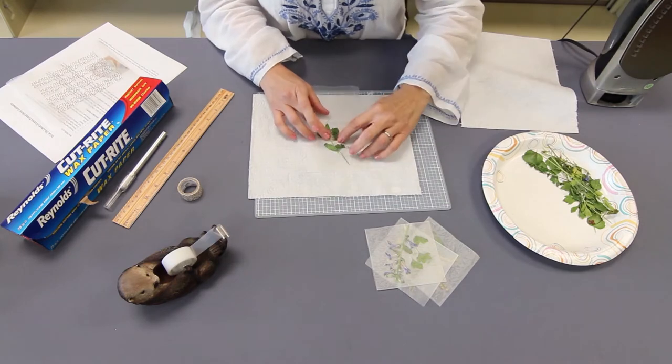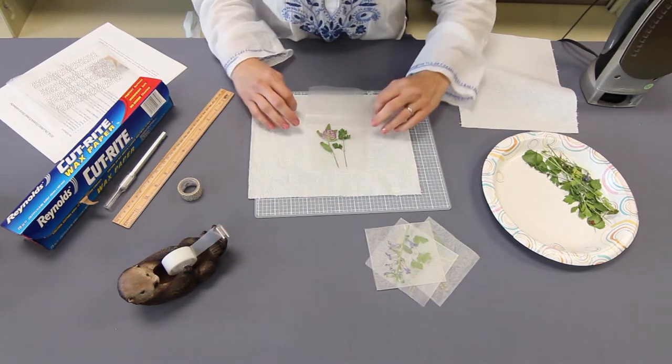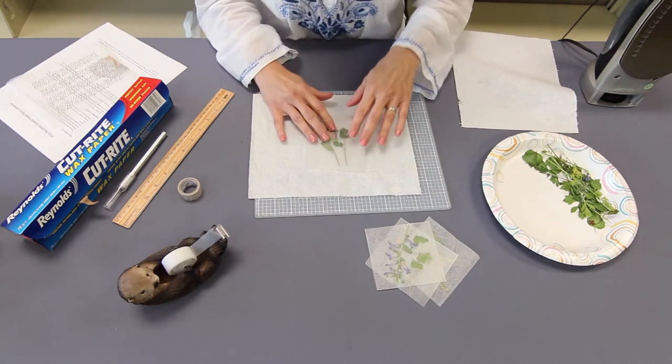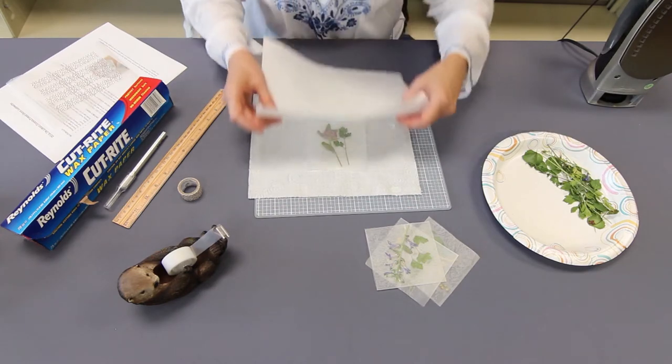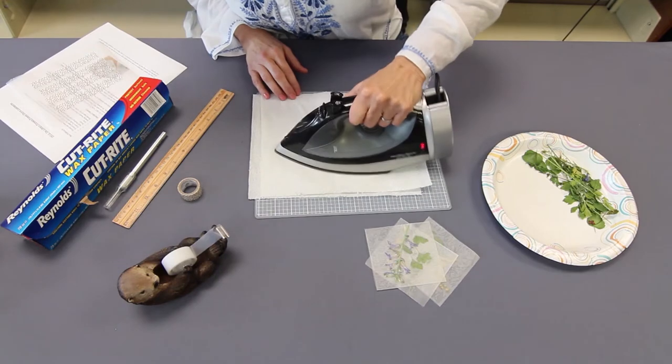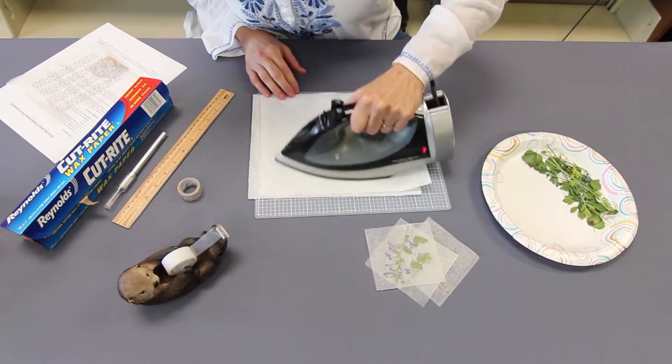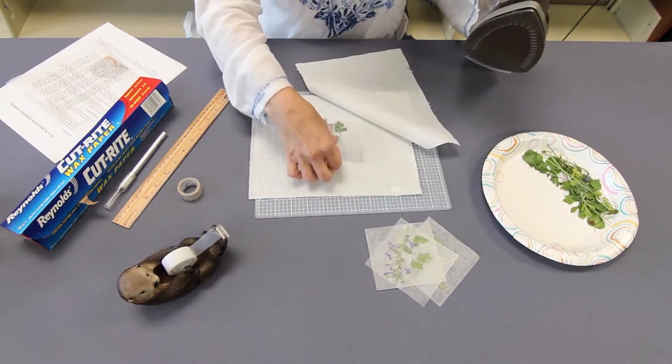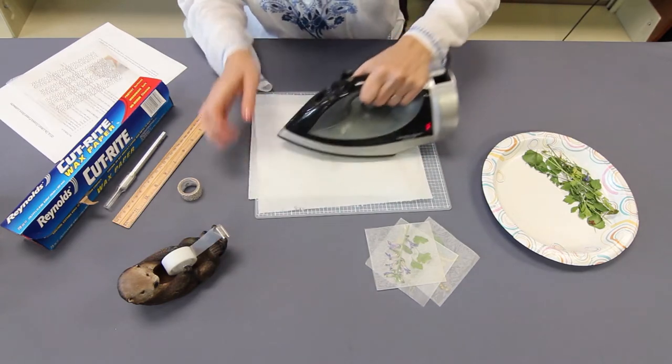Put your flowers inside towards the center, put your paper towel on top, press down. Turn it over and repeat.